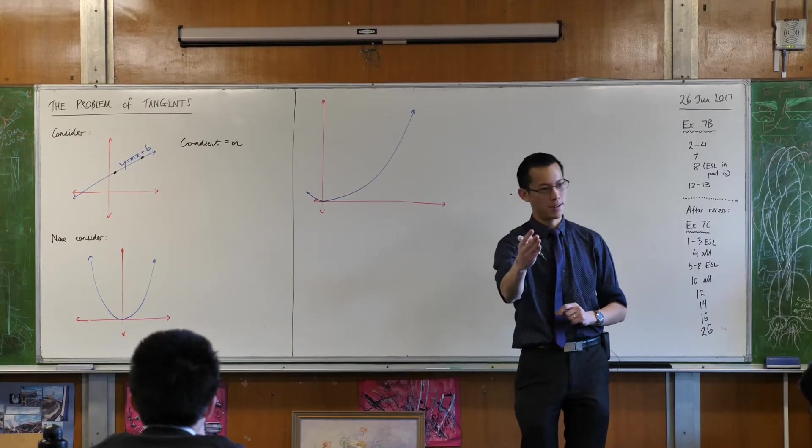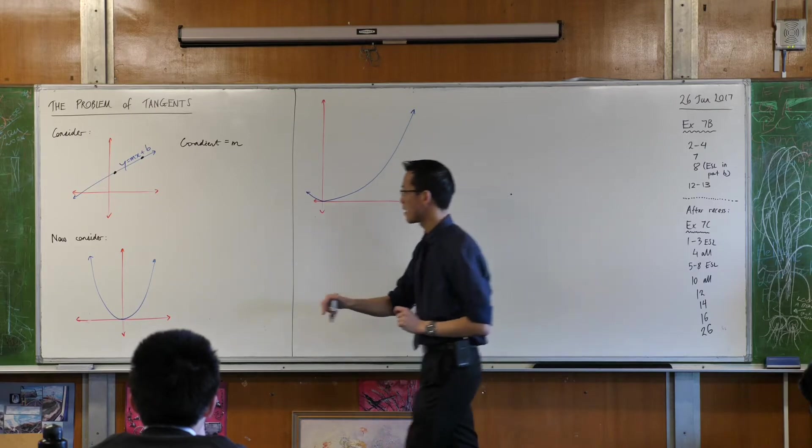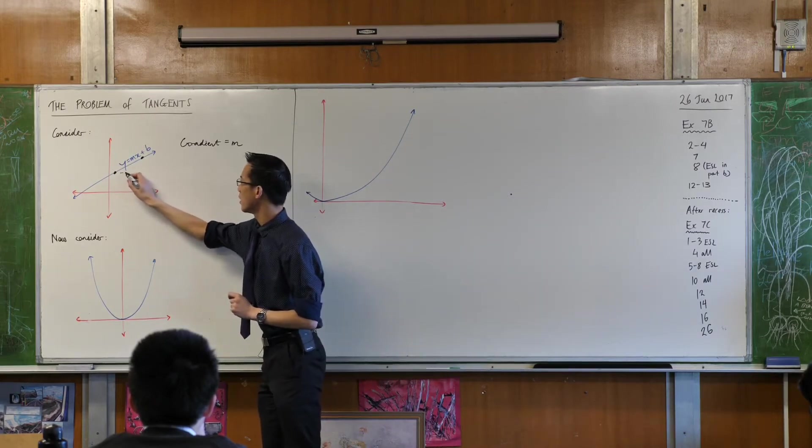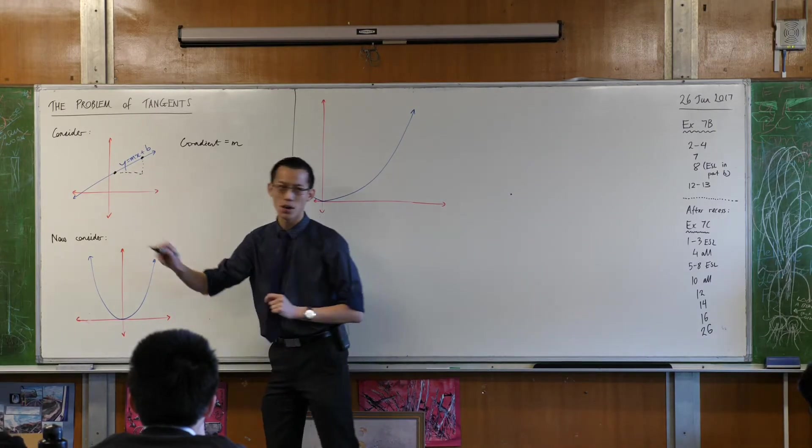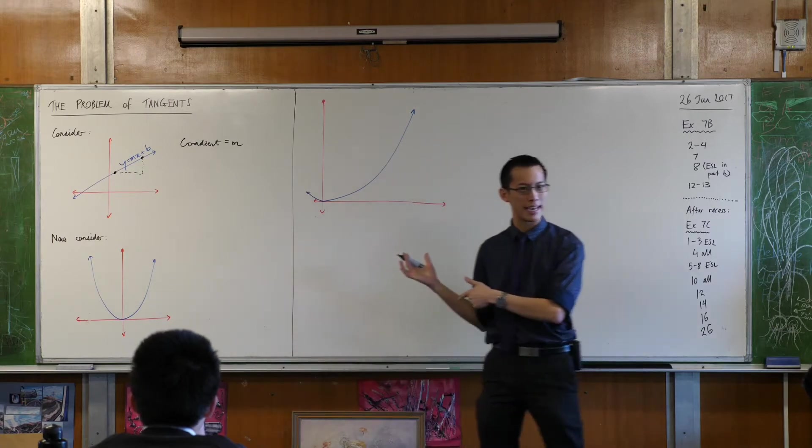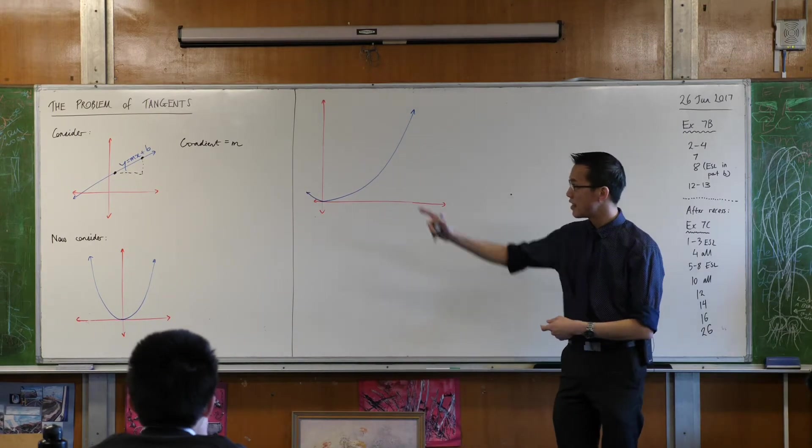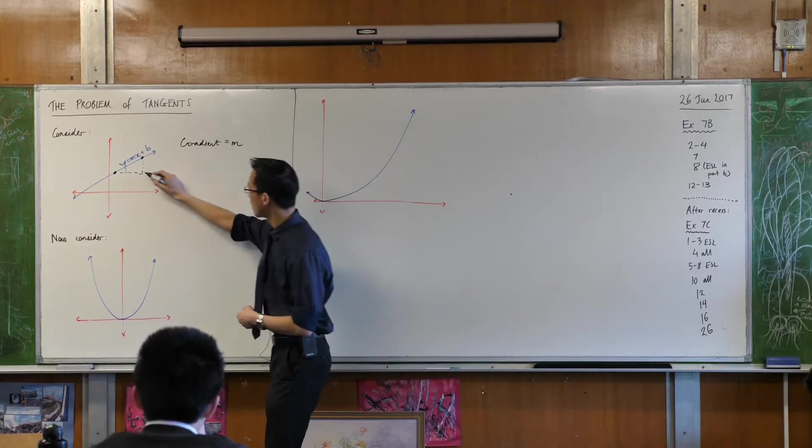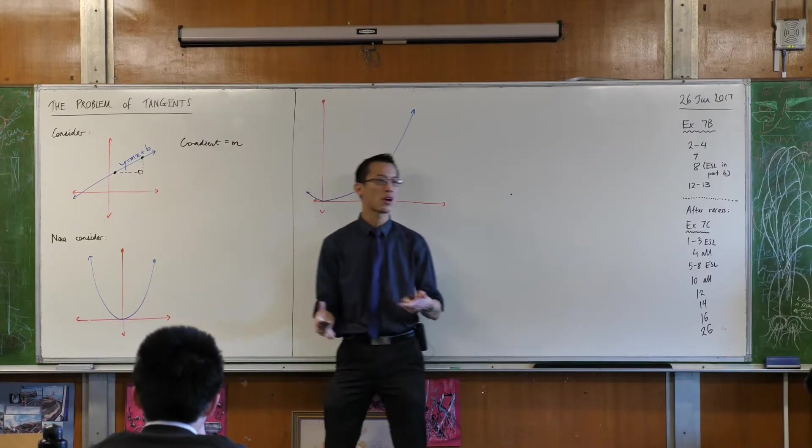You'd launch into your gradient formula, wouldn't you? Help me out here. What is the gradient formula in terms of the shape of what you're looking at? Well you need two points and then you sort of draw this right-angled triangle. What do you do with this right-angled triangle?